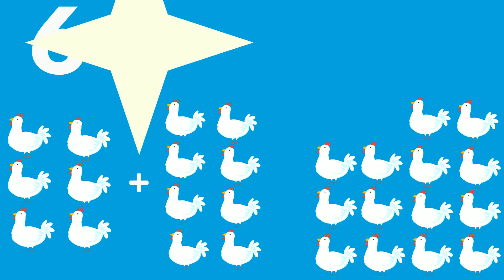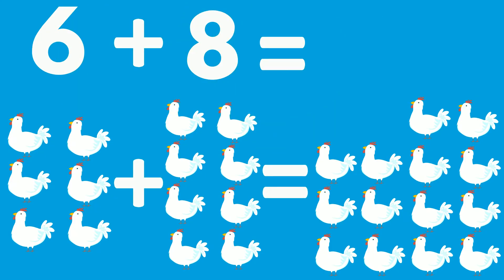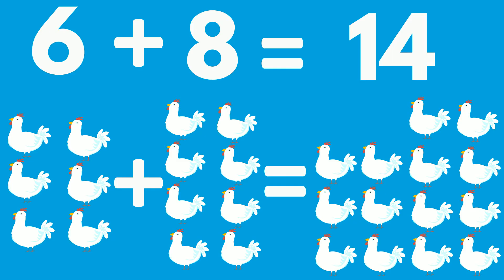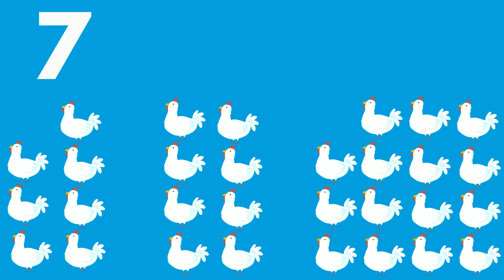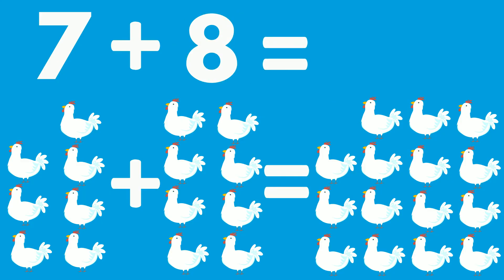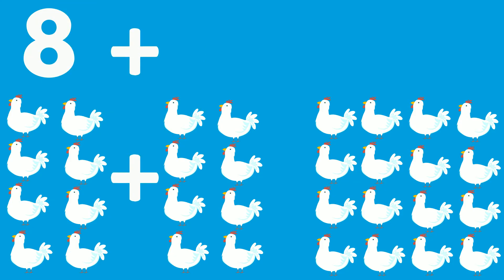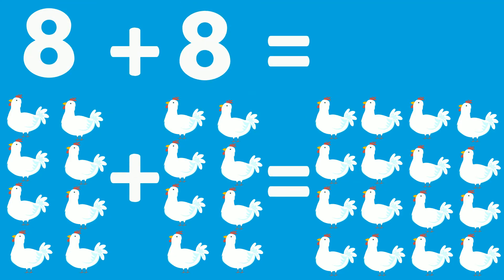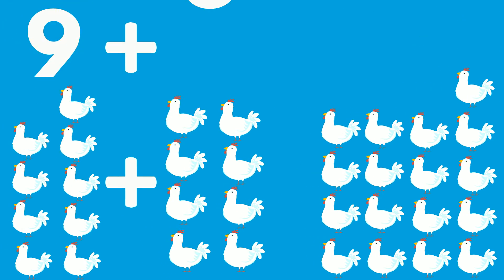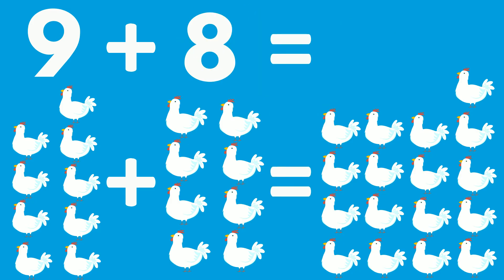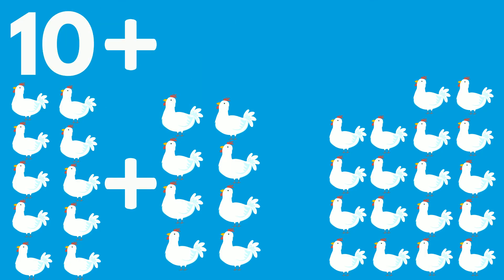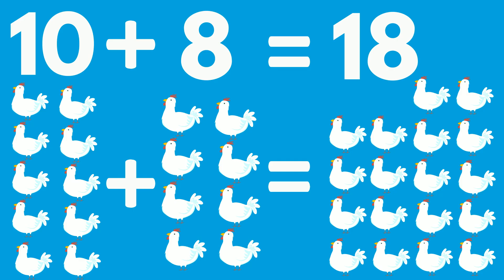6 chickens plus 8 chickens equals 14 chickens. 7 chickens plus 8 chickens equals 15 chickens. 8 chickens plus 8 chickens equals 16 chickens. 9 chickens plus 8 chickens equals 17 chickens. 10 chickens plus 8 chickens equals 18 chickens.